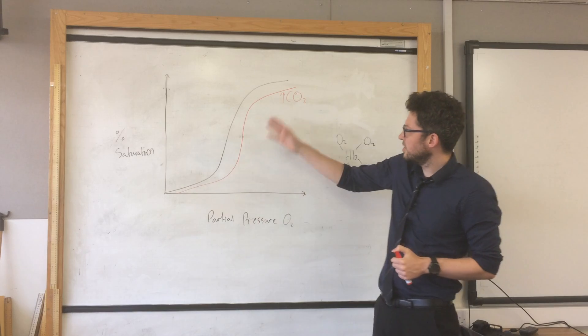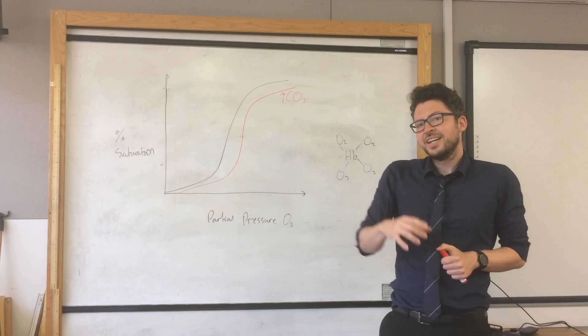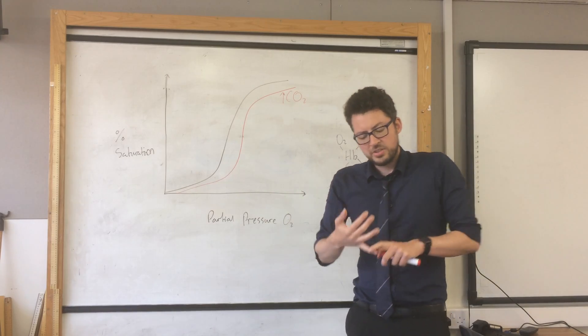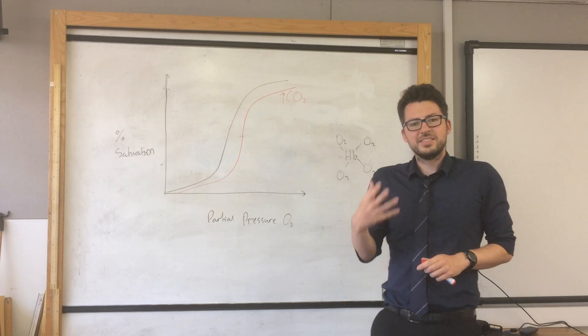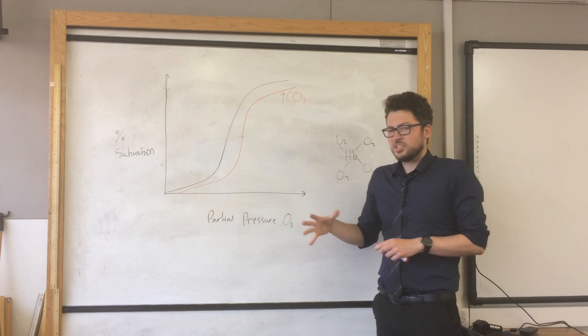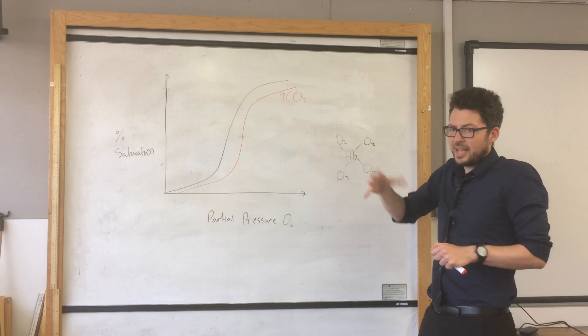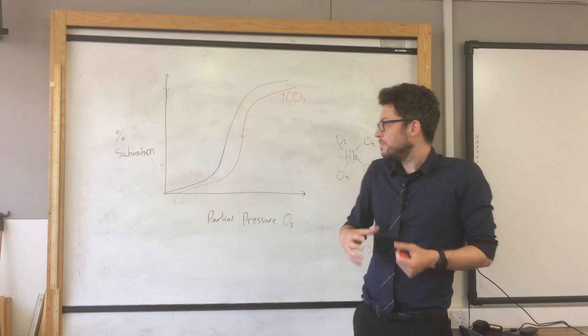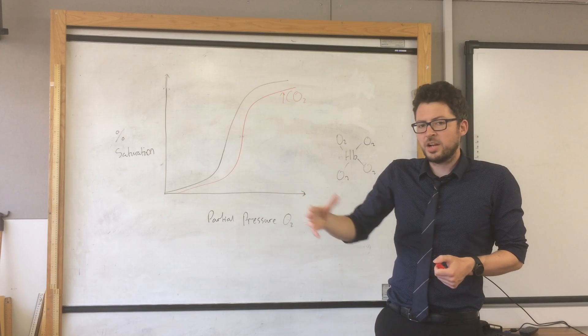Now the reason for this is because increased CO2 levels in the blood increases the acidity inside the red blood cells. And that increased acidity actually changes the structure of hemoglobin again, slightly changes the shape, making it more difficult for hemoglobin to bind.